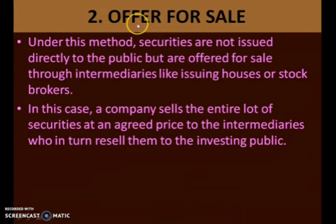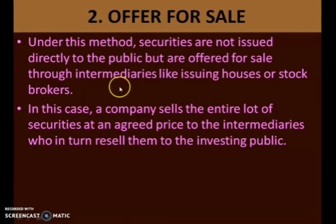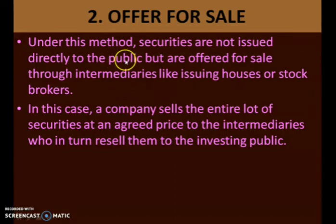The next is offer for sale. This is the second method. Under this method, securities are not issued directly to the public but are offered for sale through intermediaries, like issuing houses or stock brokers. So through stock brokers or issuing houses, the companies connect with the public. Offer for sale means some intermediaries are involved.